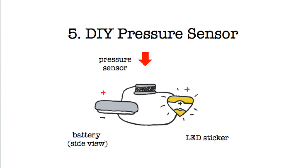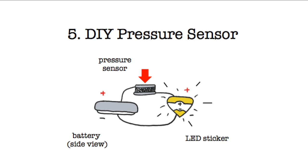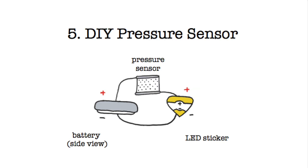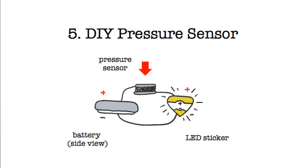As you press on the sheet, the resistance goes down as the conductive particles get closer together. This allows more electricity to flow through, making your light brighter. So, the harder you press, the more electricity can flow through and the brighter your light.